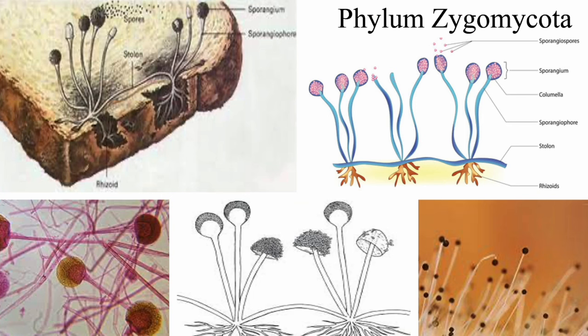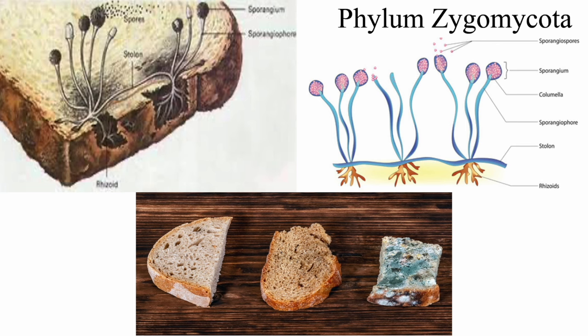Zygomycota is a phylum including the fast-growing molds on breads and fruit. As a form of sexual reproduction, these fungi send up stalks that release spores into the air, and when two compatible spores meet, they form a zygospore. Whenever you see that one slice in a bag of bread has mold on it, throw the whole bag away. Other slices might look fine to eat, but the entire bag contains many spores and rhizoids already growing within the bread itself. Don't just cut off the moldy part — just throw it all away.